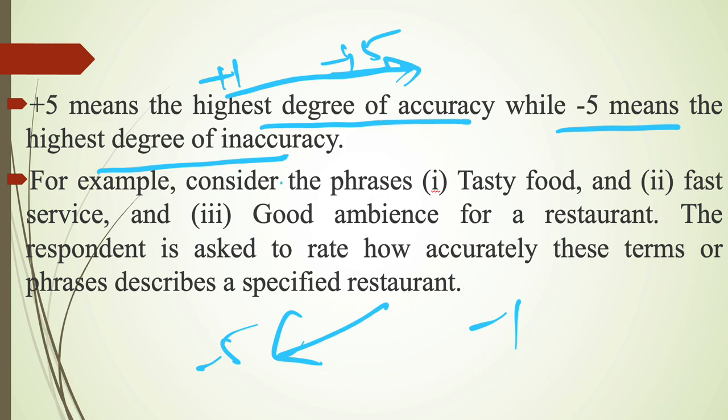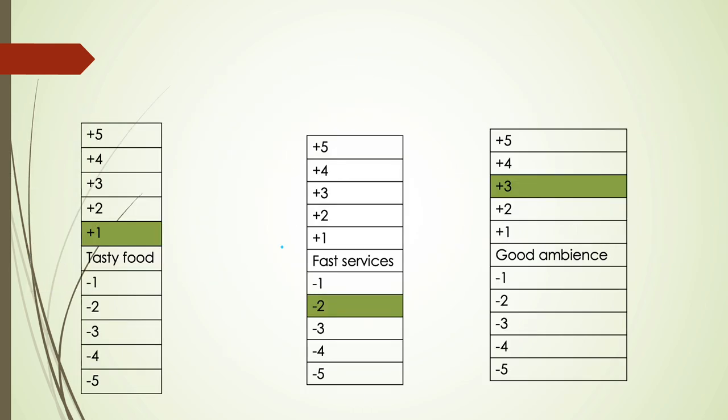For example, consider the phrases tasty food, fast service, and good ambience for a restaurant. The respondent is asked to rate how accurately these terms or phrases describe a specified restaurant. So these are the ratings for the restaurant. For tasty food, the respondent gives plus 1. For fast service, the respondent gives minus 2, and for good ambience the rating is plus 3.